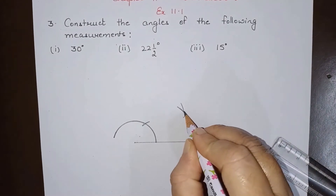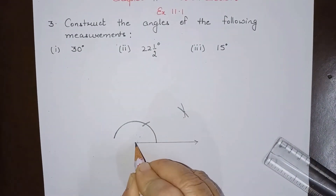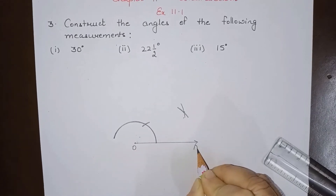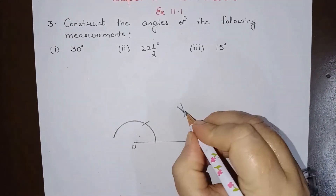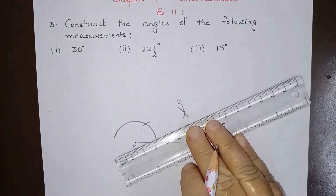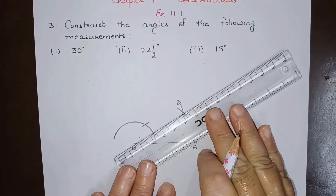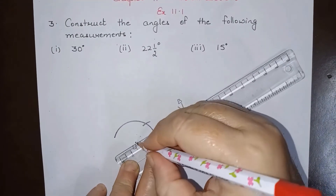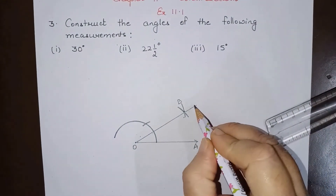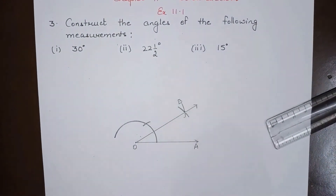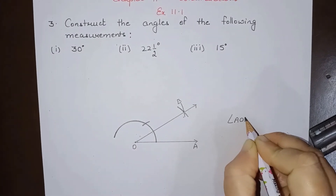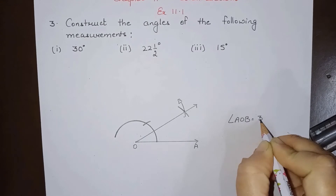Now we will join this point with this. Let us take this point as O, this as A, and this point as B. So let us join O and B. This angle is an angle of 30 degrees. We can write angle AOB is 30 degrees.